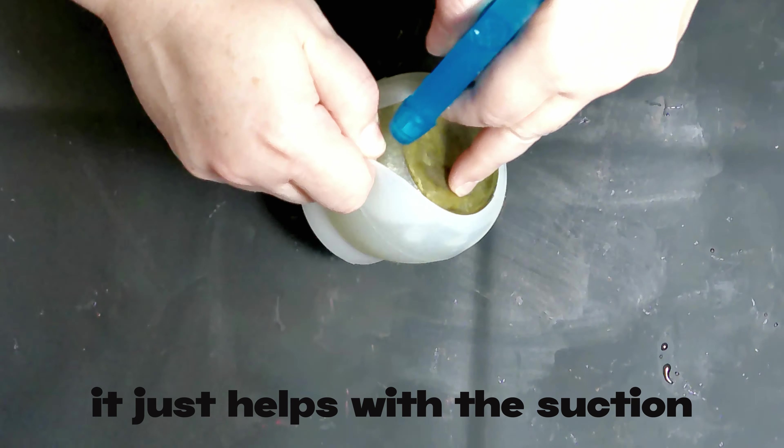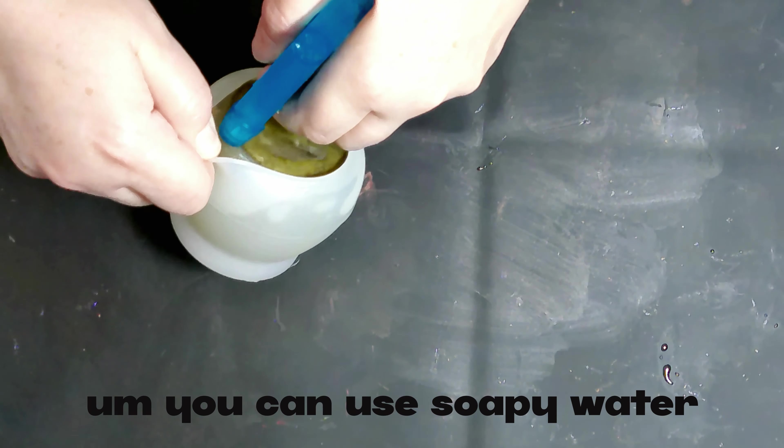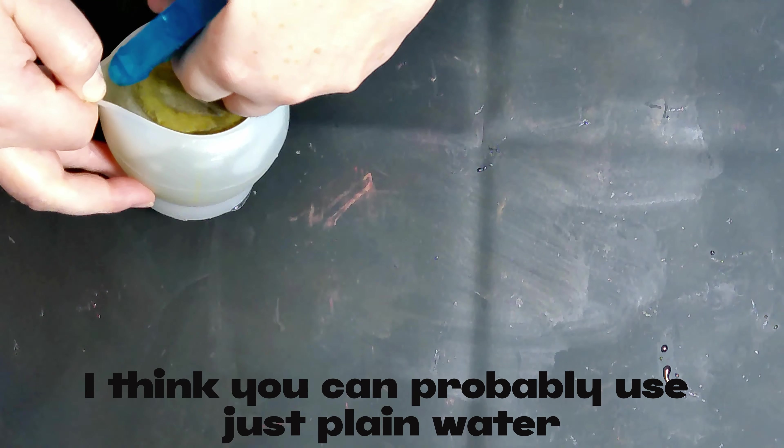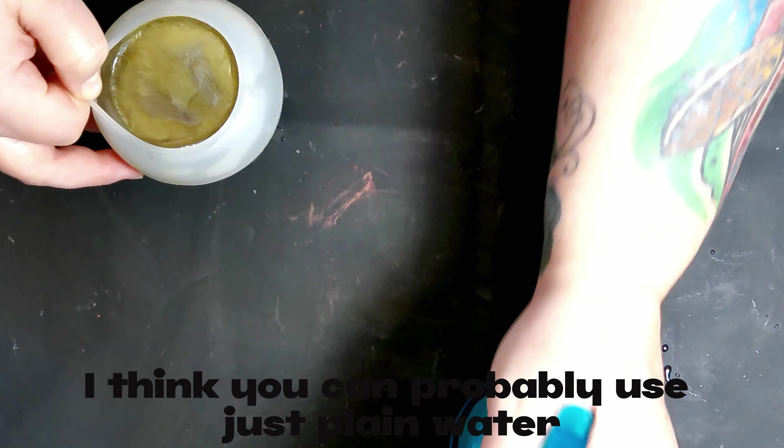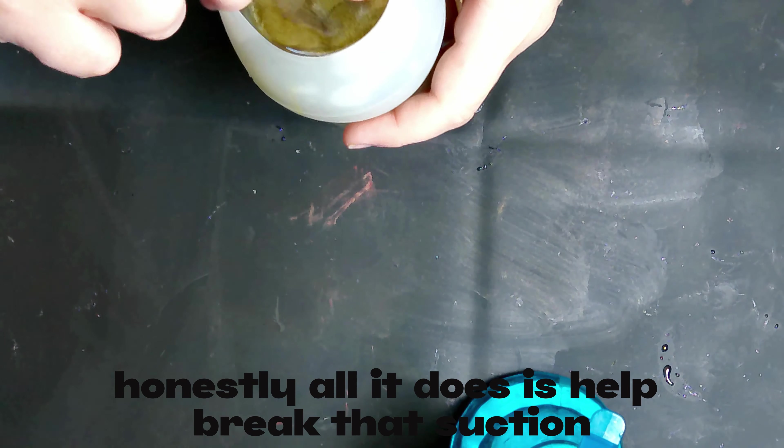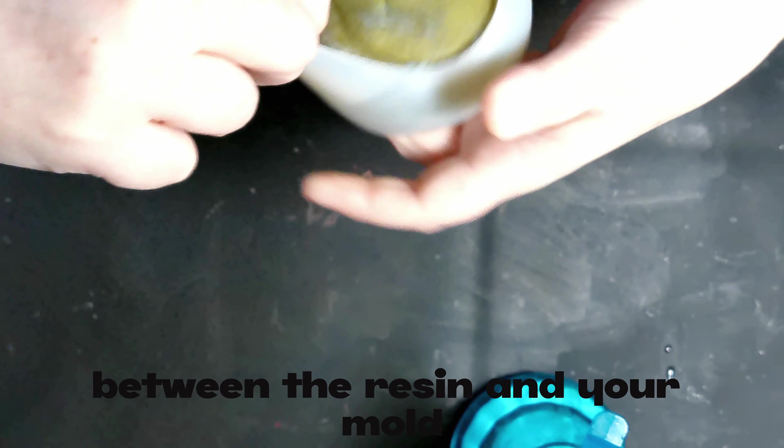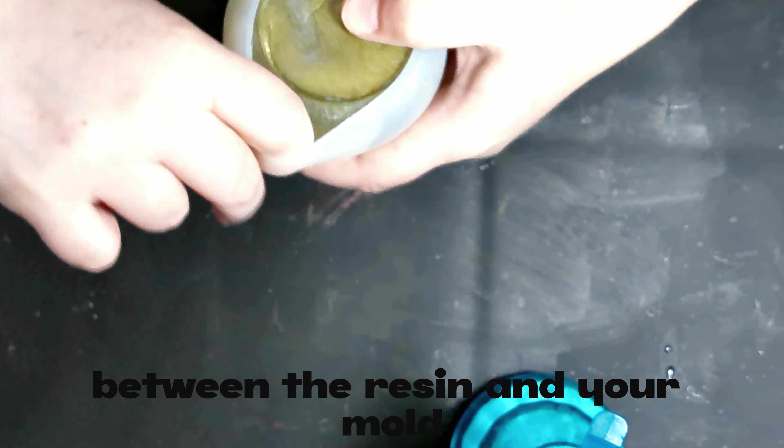And then I'm going to get some 99% isopropanol alcohol and spray it in there. It just helps with the suction. You can use soapy water. I think you can probably use just plain water honestly. All it does is help break that suction between the resin and your mold.